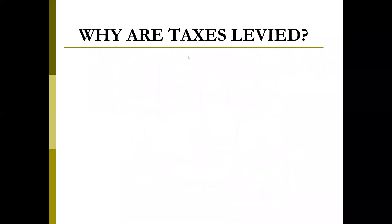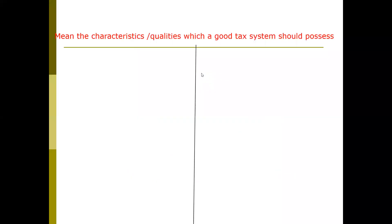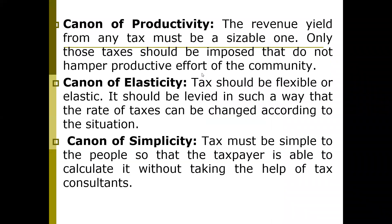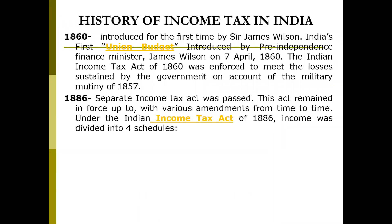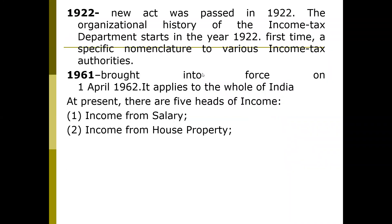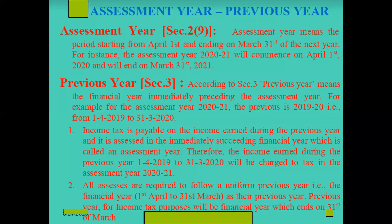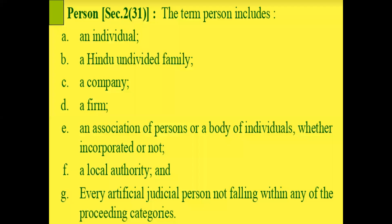I wanted to test how many of you are able to understand. Now, these are all the topics we have discussed — deemed assessee, assessee, assessee in default, person, assessment year, previous year. Now I will start the new topic: what is agricultural income?